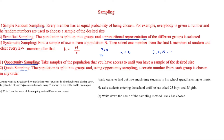We have two questions to identify the sampling method used. The first: Kwame wants to investigate how much time year 7 students spend playing sport. He gets a list of year 7 students and selects every fifth student to add to his sample. This is systematic sampling, because he is selecting every kth member — in this case k equals five.